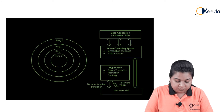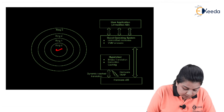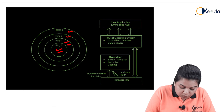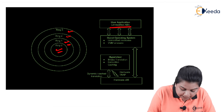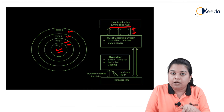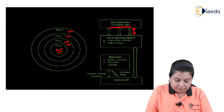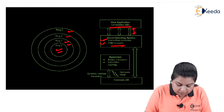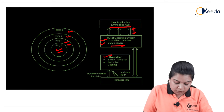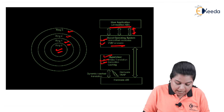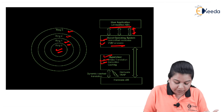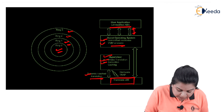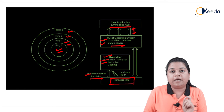In the VMware diagram, we have Ring 0, Ring 1, 2, and 3 for privileged instructions and guest operating systems. User applications or unmodified ABI interact directly with the guest operating system. The hypervisor includes binary translation, instruction caching, and hardware trap handling, interacting with the x86 hardware architecture.